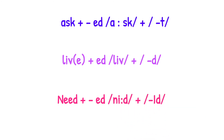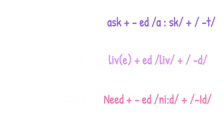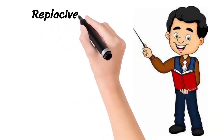In the word 'asked' you may realize the /t/ sound at the end. In the word 'lived' you may realize the /d/ sound at the end. In the word 'needed' you can realize the /ɪd/ sound at the end. So these are the variations of the morpheme -ed. All English verbs in their second form have one of these sounds: /t/, /d/, or /ɪd/ at the end.